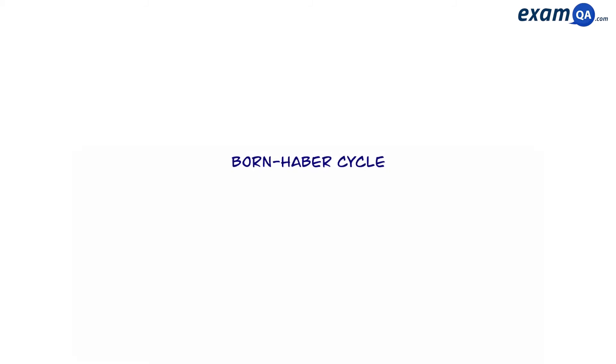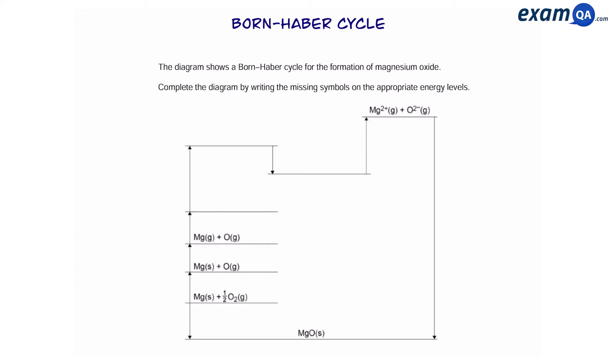Hello and welcome to part 2 on Born-Haber Cycles. Here we have a Born-Haber Cycle for Magnesium Oxide and the question says, complete the diagram. Okay, so let's see what we have already. We can see that this is a Born-Haber Cycle for Magnesium Oxide.